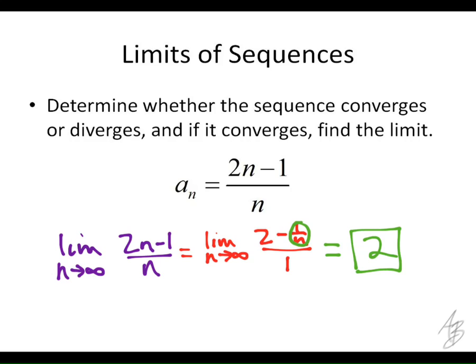So when we try to answer whether it converges or diverges, the first thing we want to do is find the limit. If we can find the limit, then it converges. So we would say the sequence converges to 2.